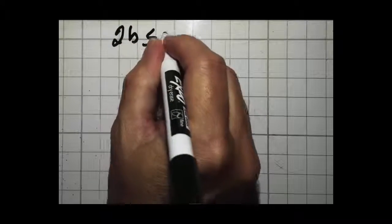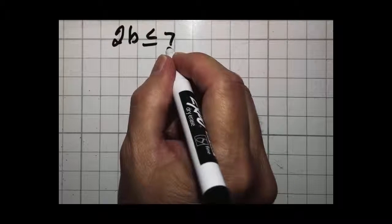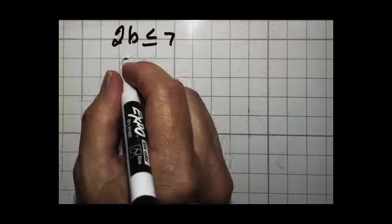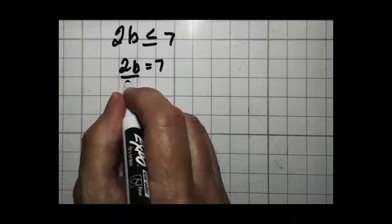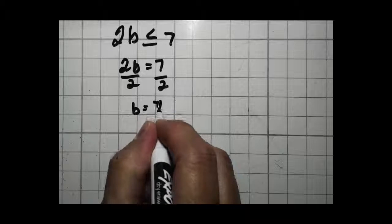If I'm given an inequality like this, 2b is less than or equal to 7. If you've watched my previous videos, you know how I recommend you solve those. You pretend like that's an equal sign, so 2b equals 7. Solve for your variable, in this case it's b, b equals 7 halves.